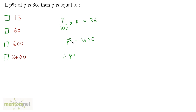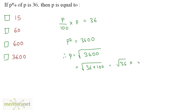Therefore P is equal to the square root of 3600. We can split this as root 36 times root 100 — remember the laws of indices or surds. Root 36 is 6 and root 100 is 10, so the answer is 60. P's value is 60.